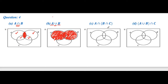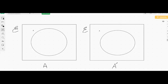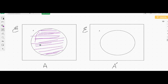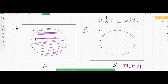Now let's come to the basic concepts. Suppose this is set A — we shade region A. The region outside of A is called A complement, meaning not A, or the area outside of A. So this region outside of A is A complement.